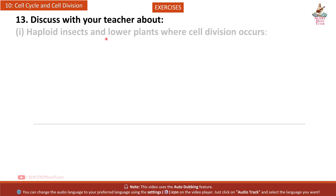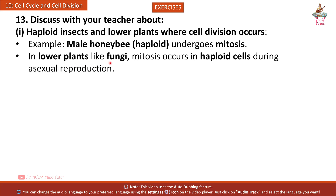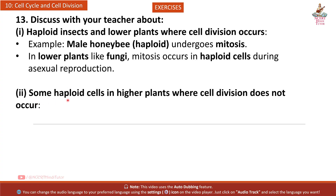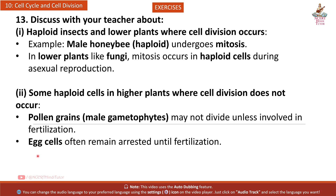Question 13: Discussion topics. 1. Haploid insects and lower plants where cell division occurs — example: male honeybee (haploid) undergoes mitosis; in lower plants like fungi, mitosis occurs in haploid cells during asexual reproduction. 2. Some haploid cells in higher plants where cell division does not occur — pollen grains (male gametophytes) may not divide unless involved in fertilization; egg cells often remain arrested until fertilization.